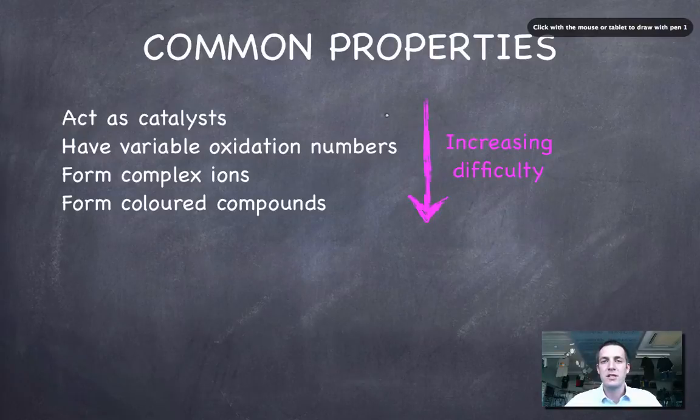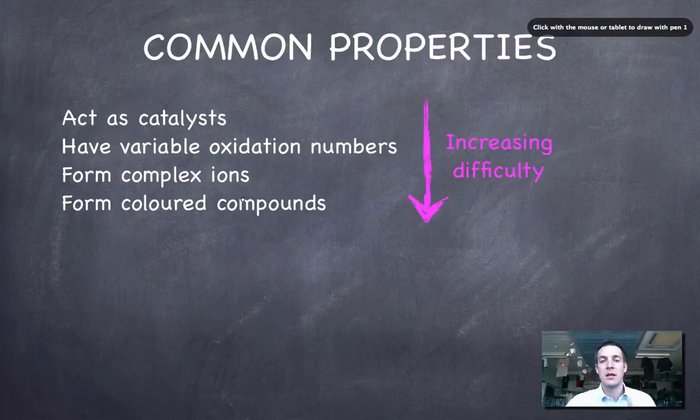I've said that their difficulty is a little bit less than that of these two things here where we start looking at what complex ions are, how they form and how it is that compounds of transition metals can end up being coloured. So that's actually going to be covered in the next couple of films.